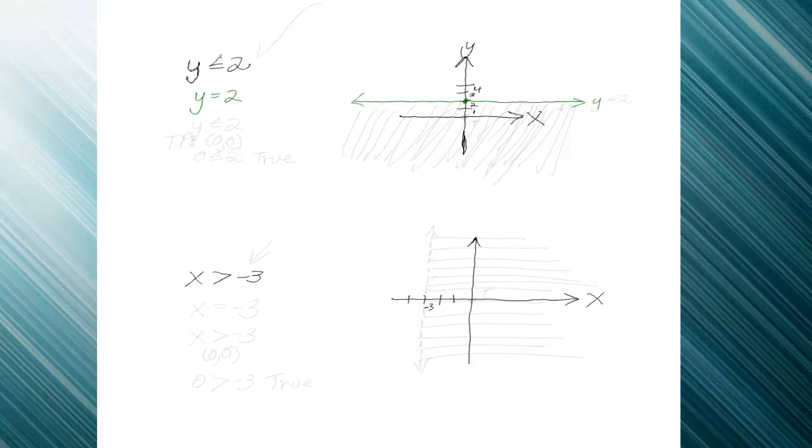Now I choose the test point, and I'm going to choose (0,0) because it's the easiest and because the line y equals 2 doesn't go through it. That makes it good too. So I'm going to graph the inequality y is less than or equal to 2 by first choosing a test point, my TP.